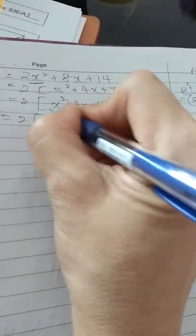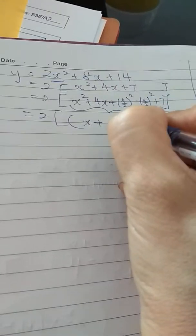From here, these 3 terms will change into this one. x² becomes x, plus here, so copy the sign plus. 4 divided by 2 is 2.